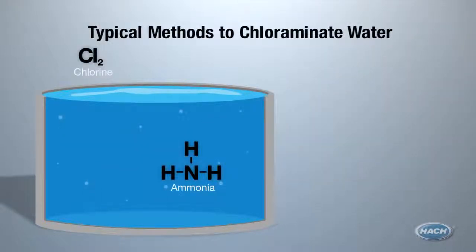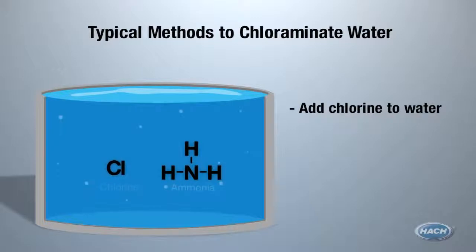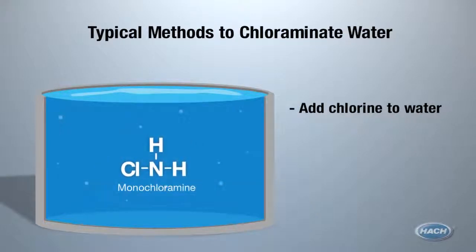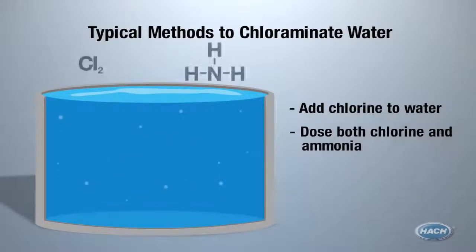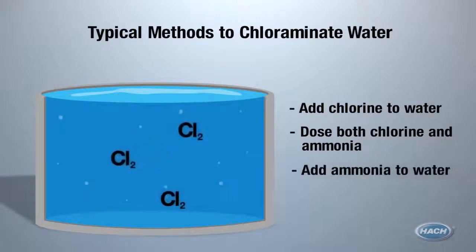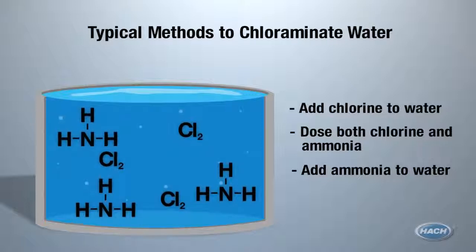When you chloraminate, you add chlorine to water with existing ammonia, or dose both chlorine and ammonia together, or you can add ammonia to water that has already been chlorinated in the treatment plant or another utility. In this example, let's pretend we are adding chlorine to water that already has ammonia.